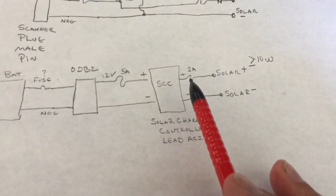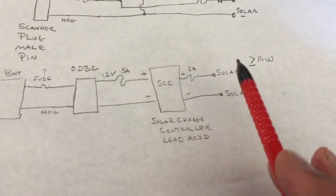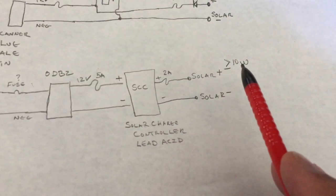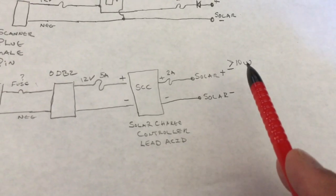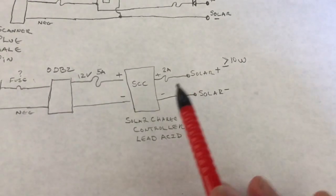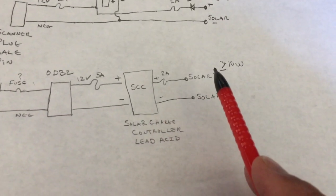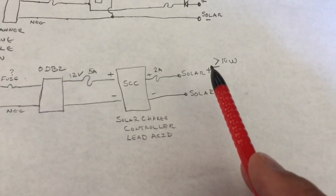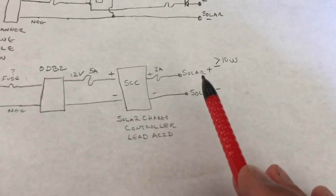That's going to hook to our solar panels. We're probably going to have two amp protection there to protect this wire here and again you could use a larger solar panel.